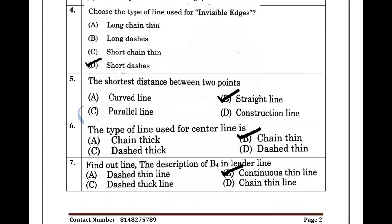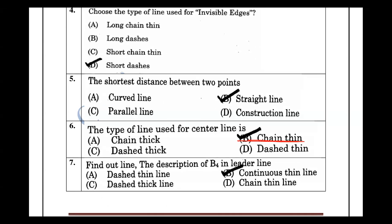The chain-thin line is used for the center line. Next, the description of the leader line — the leader line is a continuous thin line. Looking at the types of lines, A to D represent the continuous line.